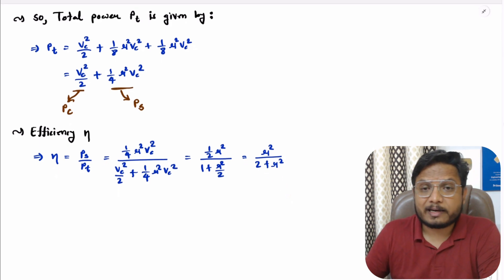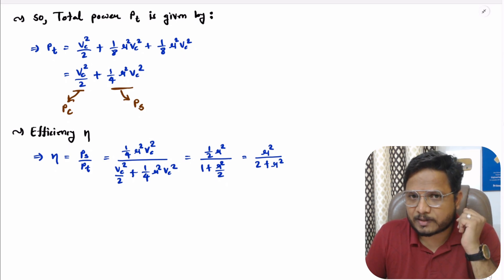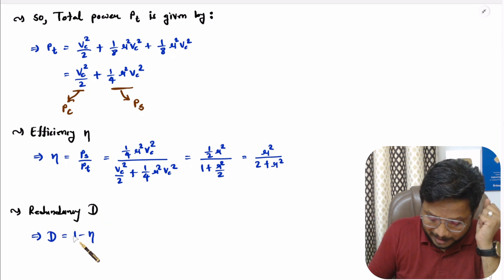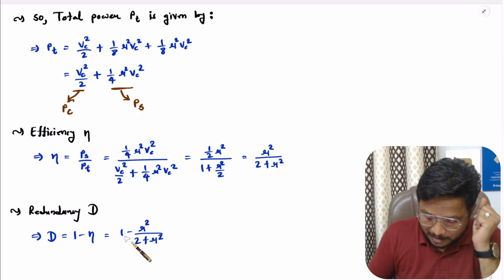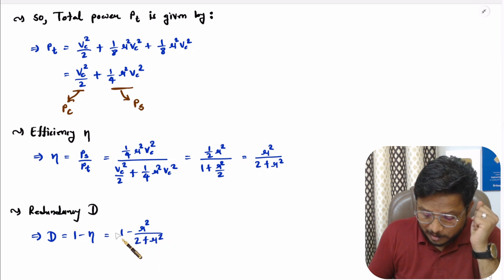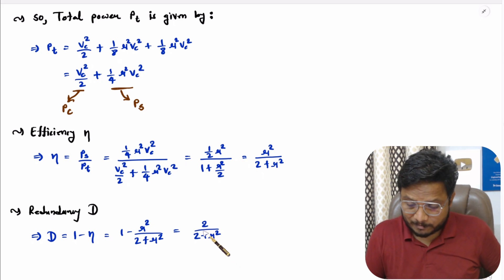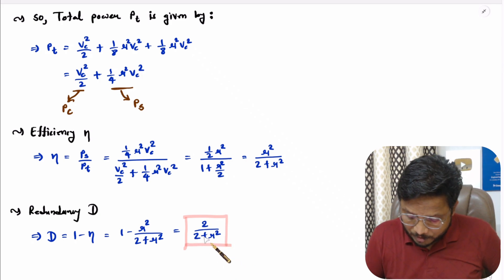Redundancy is simply 1 minus efficiency. So redundancy D = 1 − μ²/(2 + μ²). Taking LCM: D = (2 + μ² − μ²) / (2 + μ²) = 2 / (2 + μ²). So the redundancy equation is D = 2/(2 + μ²).